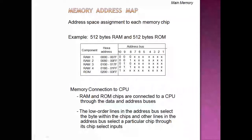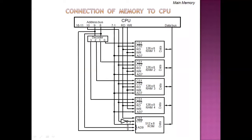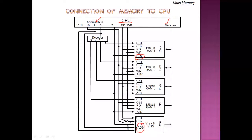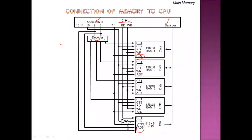This shows the memory connection to CPU. The CPU has the data bus and address lines. Lines 1 to 7 go to all RAM chips and the ROM chip as address lines. Lines 8 and 9 are connected to a 2-by-4 decoder. If the decoder output is 0, it selects RAM chip 1; if the output is 1, it selects RAM chip 2, and so on.